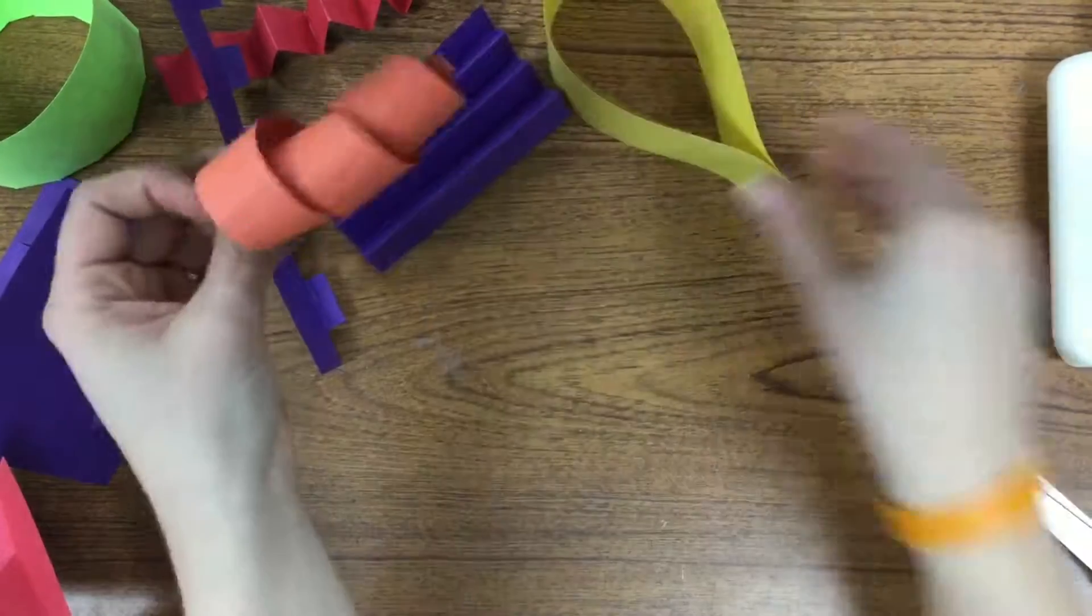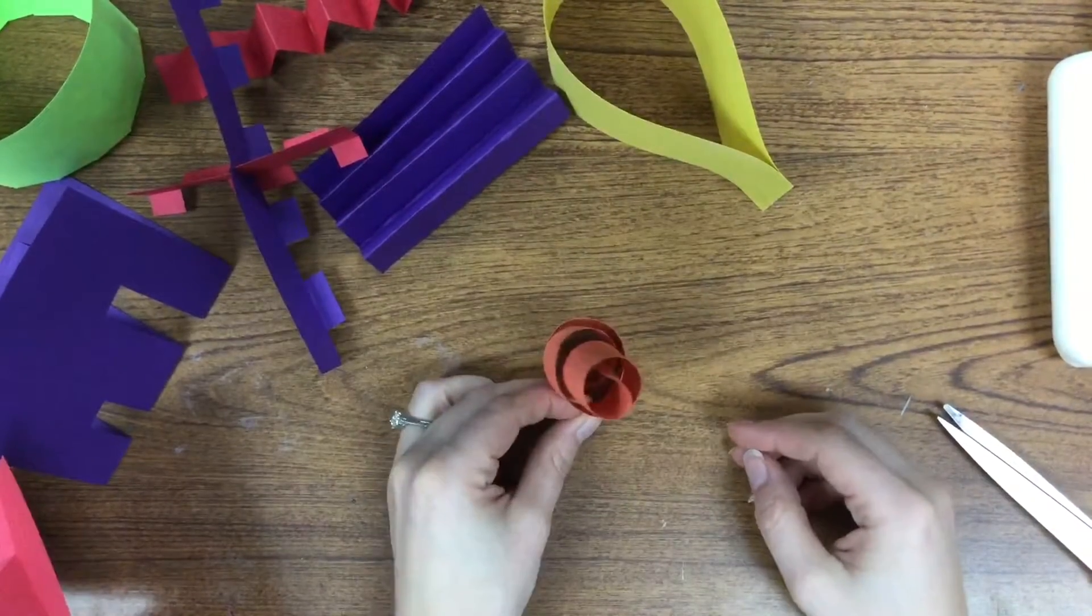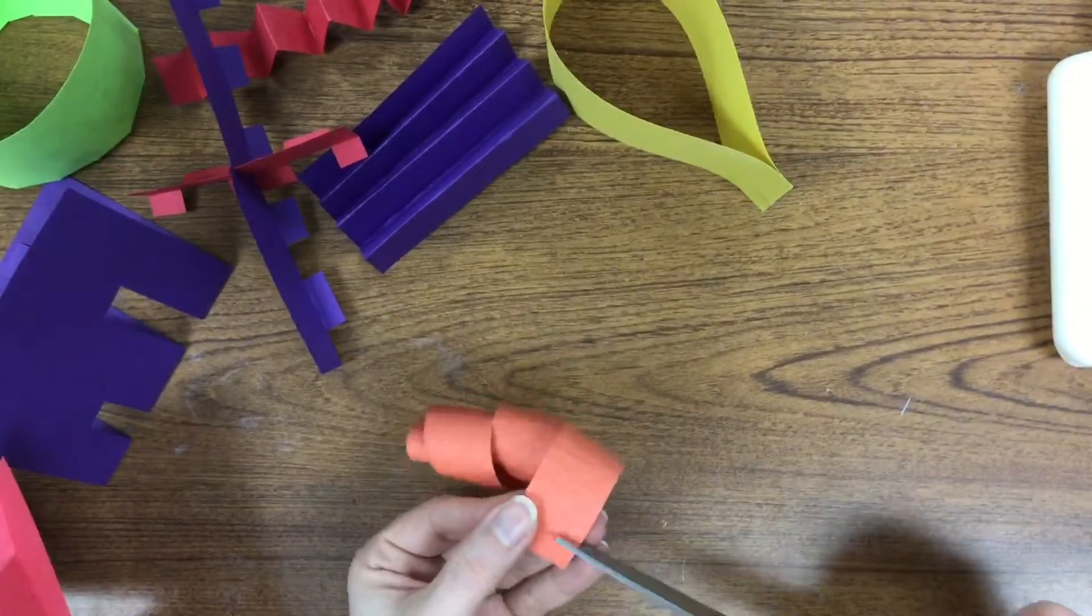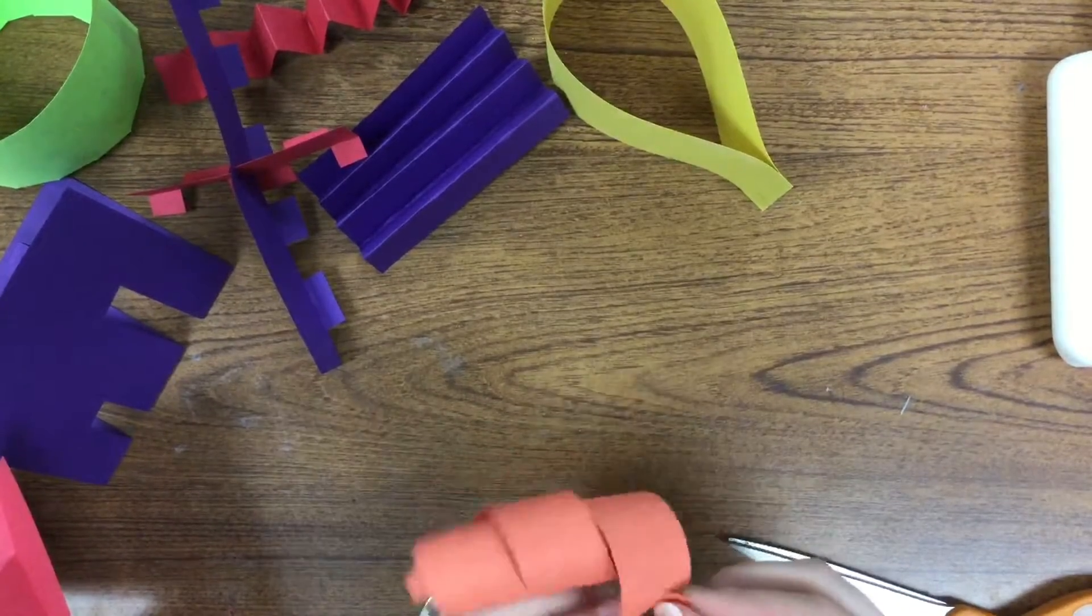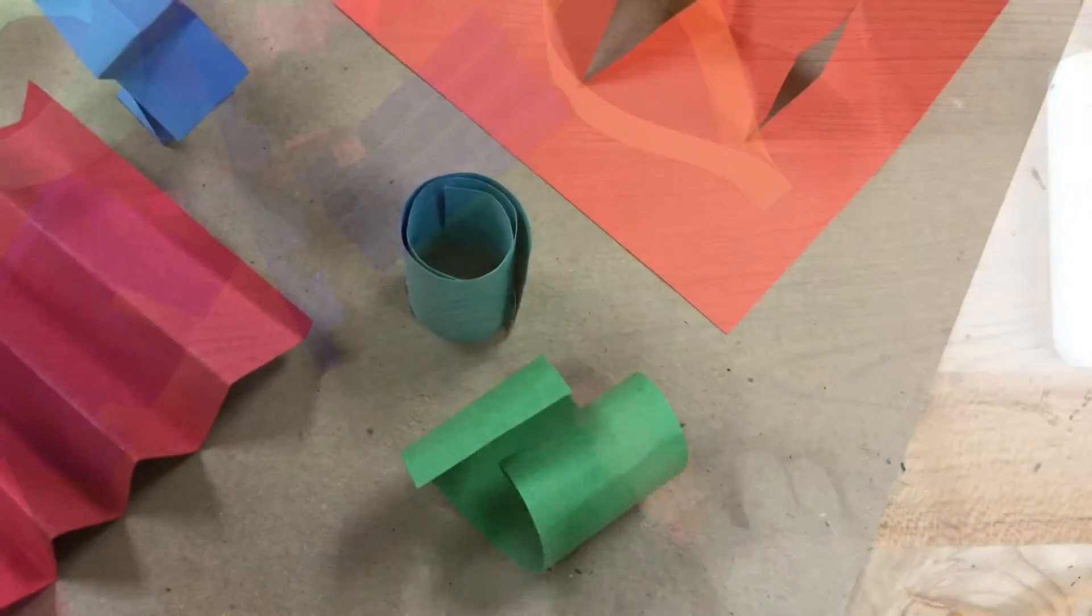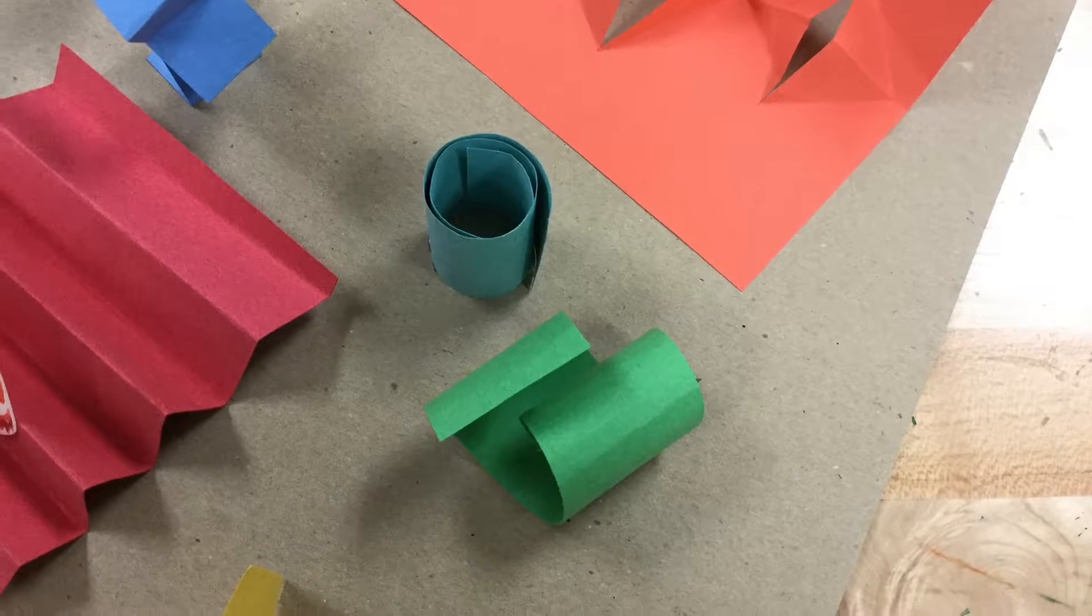Now I can attach it to something or I can cut slips in the bottom and just put it on a flat piece of paper. I can also attach one of the flat sides to something like this green example.